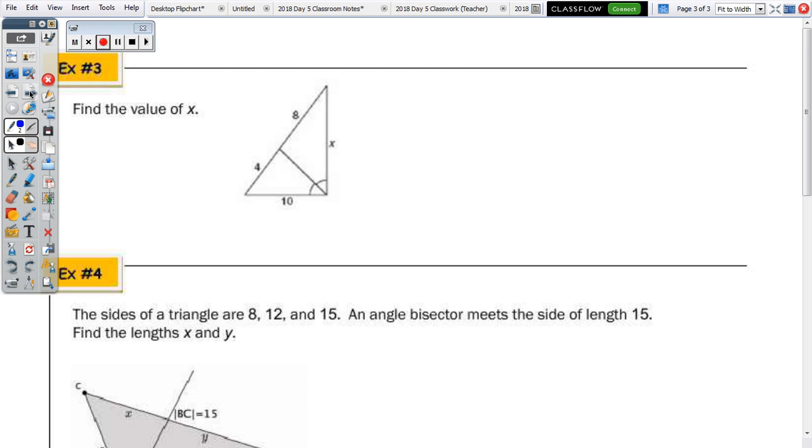So, moving to the example first, then we'll come back to finish with the proof. Find the value of X. So, this angle is bisected, so that angle is congruent to that. So, the segments that are opposite, so 4 to 8, equals 10 to X. So, cross multiply 80 equals 4X divided by 4, and X is 20.